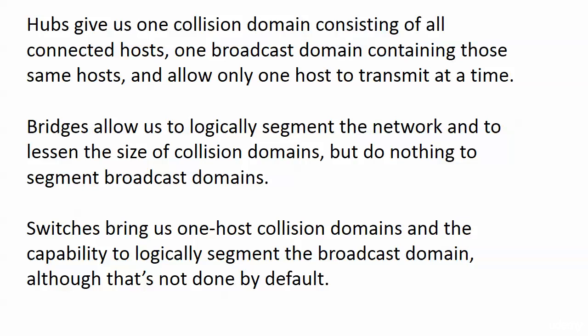A quick review before we move forward. Hubs give us one collision domain consisting of all connected hosts, one broadcast domain containing those same hosts, and only one host can transmit at a time. With bridges, they allow us to logically segment the network and lessen the size of collision domains, but they don't do anything as far as broadcast domains go. Finally, switches bring us wonderful one-host collision domains — that micro-segmentation — and the capability to logically segment the broadcast domain, although that's not done by default. We're going to be doing plenty of that in the next couple of videos. Coming up next, we're going to look at how switches handle incoming frames and the three-pronged frame-forwarding decision.